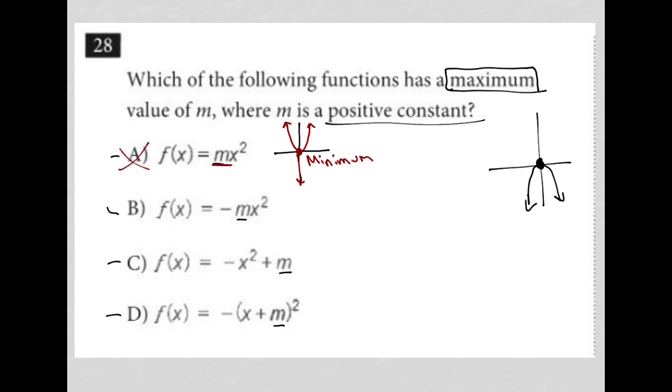And then the m value, because it's just multiplied by the x squared, really only impacts how wide or how narrow our equation, our graph is here.